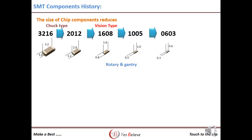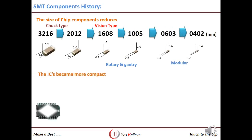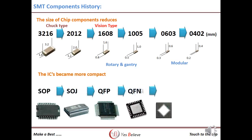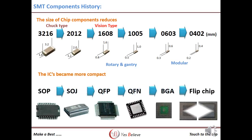To mount even smaller components with sizes of 0603 and 0402, the modular machines are used. Similar to chip components, ICs also became more compact, and the modular machine has almost reached the maximum speed.